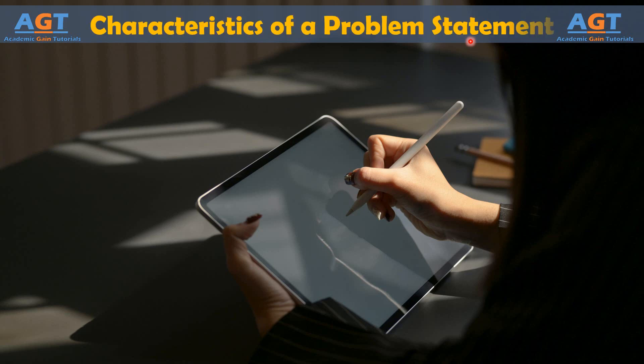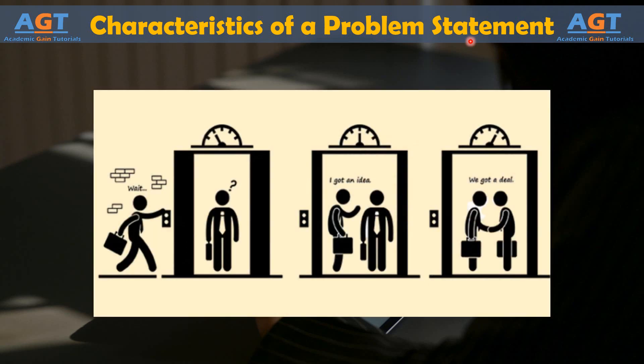A Six Sigma improvement project usually starts with a formal project statement. This is different from the basic statements used to launch a five-whys session. A strong problem statement is similar to a 30-second elevator pitch, which executives and salespeople across the globe use to hook clients or business investors on an idea.